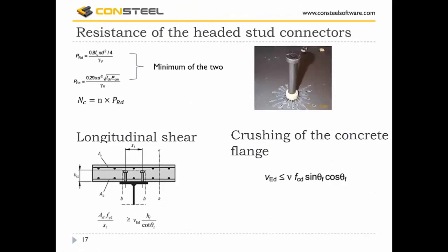The resistance of the headed stud connectors is a very important check. We must calculate the resistance of the shaft of the headed stud and the resistance of the concrete beneath it. The minimum of these two values gives the resistance of one headed stud, and multiplying by the number of studs along the span gives the total resistance. It is also necessary to ensure that the concrete flange can resist the longitudinal shear force transmitted by the shear connectors. The standard gives rules to determine the shear resistance of specific shear surfaces.